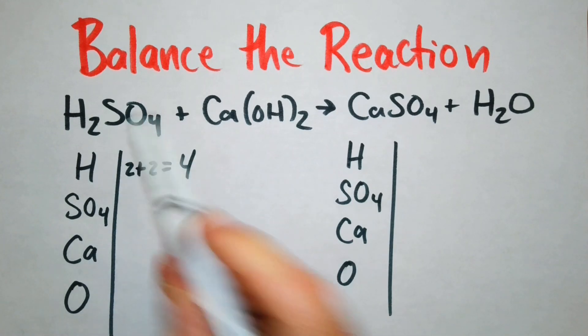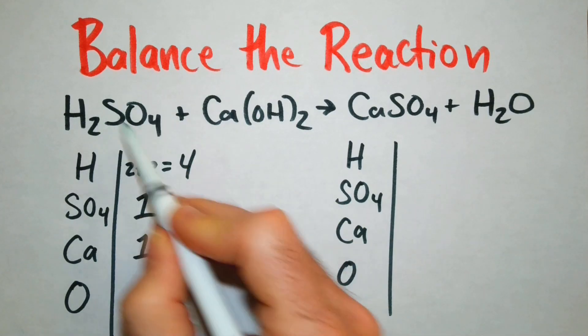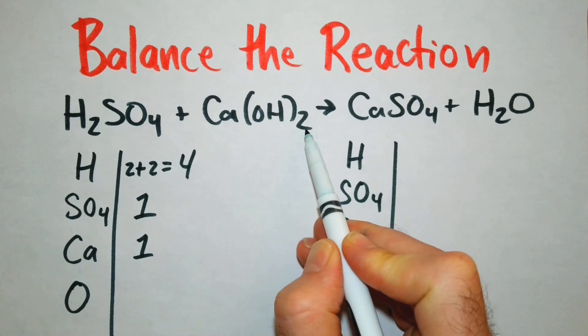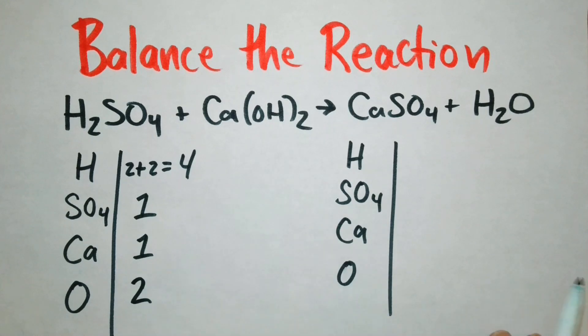We have one sulfate group. We have one calcium. In this oxygen we're only counting this one because the SO4 is grouped together. The subscript outside the parentheses applies to everything on the inside so that means we have two oxygens.